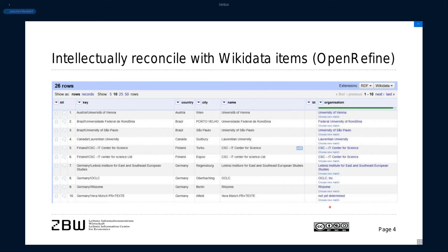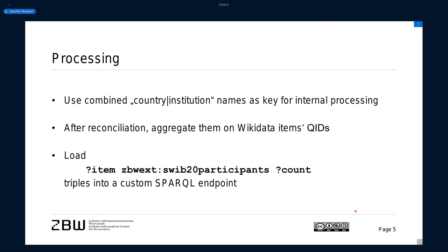In almost all cases — only 14 institutions were not in Wikidata, mostly small companies — this mapping could be done. We used a small script and OpenRefine with country and institution as keys, and after reconciliation we could aggregate on the Wikidata item QIDs. So we got a number of participants, with mostly non-unique strings for institution names, and could count them along the QIDs.